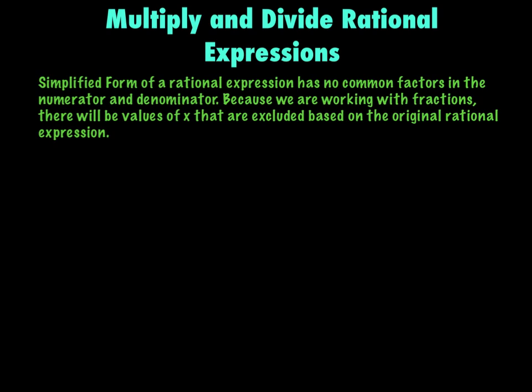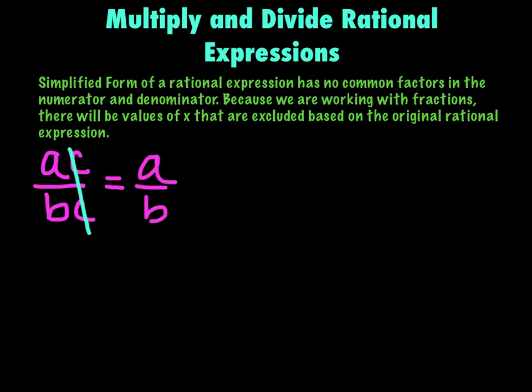What I mean is: simplified means cancel out everything you can cancel out, and even if you cancel something out, it may affect what values of x you can and can't have, just like when we have holes in our graph. So if I had something like ac over bc, it's not simplified until you cancel out those c's, and you would say it equals a over b. However, you also have to put the caveat that b can't be zero, and c can't be zero — whatever c was in the first place, it can't be zero, even though we cancel it out.